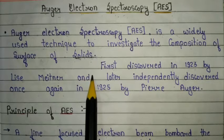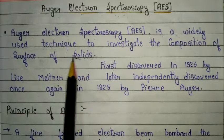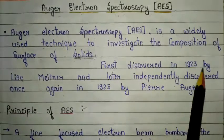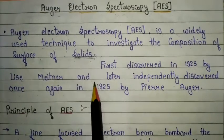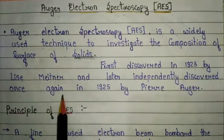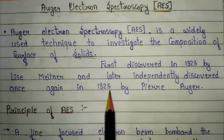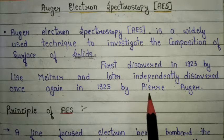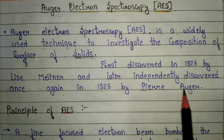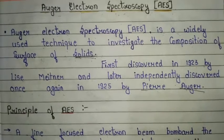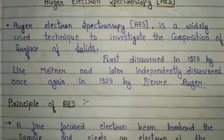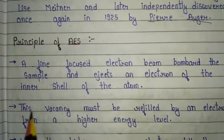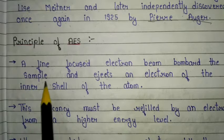AES was first discovered in 1923 by Lise Meitner, and later independently discovered again in 1925 by Pierre Auger. That is why it is named Auger electron spectroscopy — the name comes from Pierre Auger. Now, the principle of Auger electron spectroscopy is very important, and in this video we are going to discuss the principle point-wise and also explain it using a diagram.